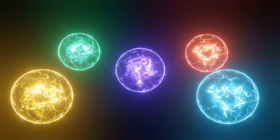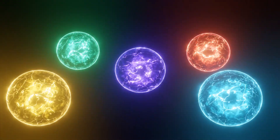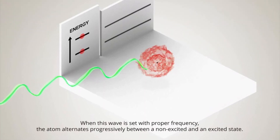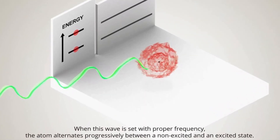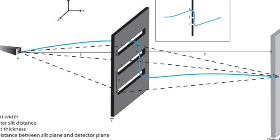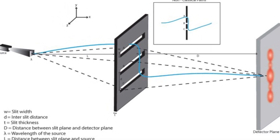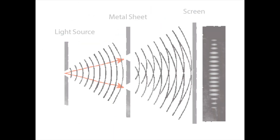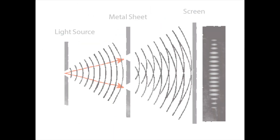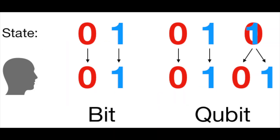One of the key features of quantum mechanics is superposition. Superposition means that a quantum particle can be in multiple states at the same time. For example, a quantum bit or qubit can be in a state of zero and one at the same time.